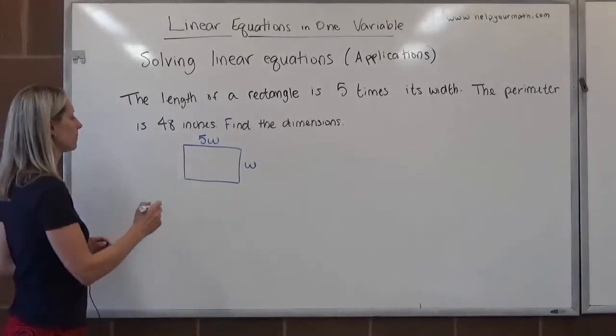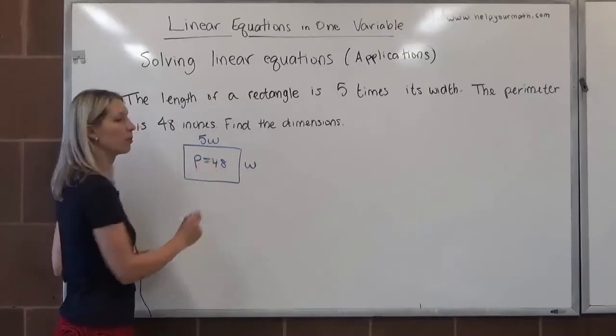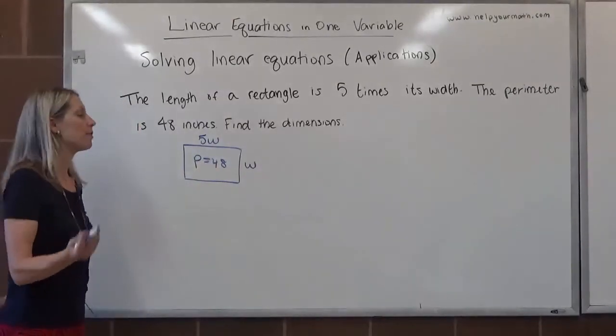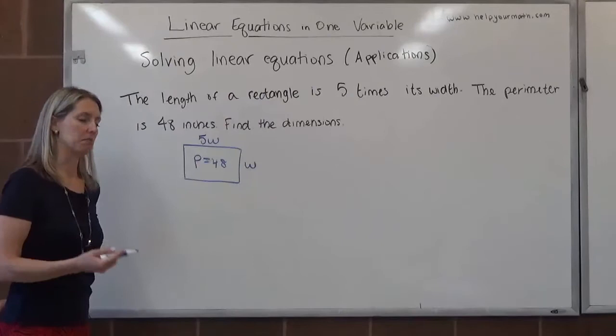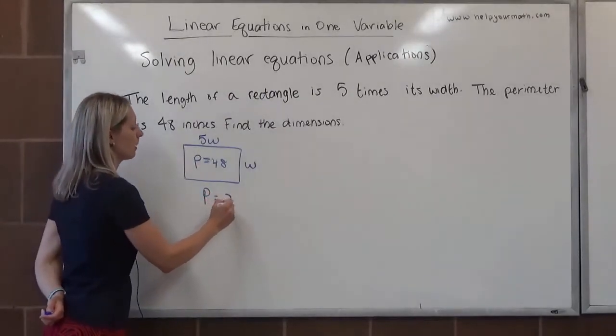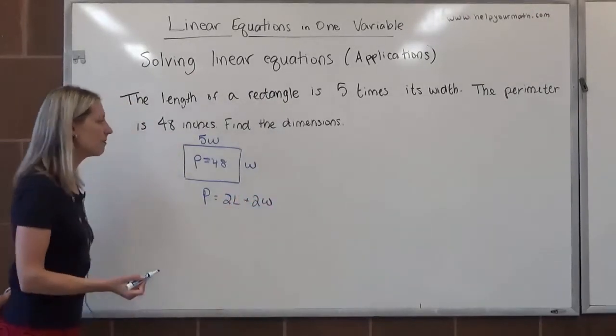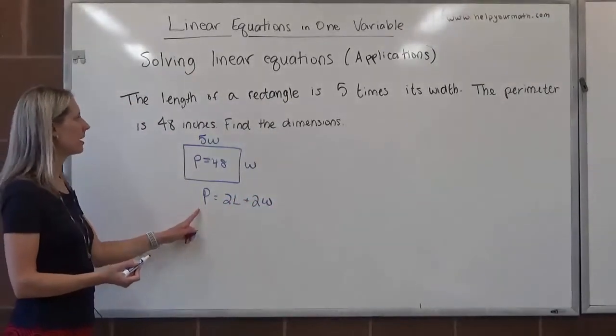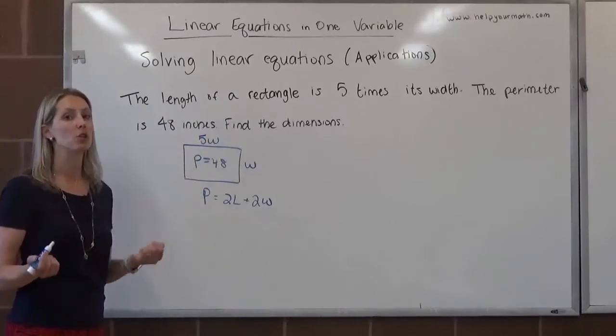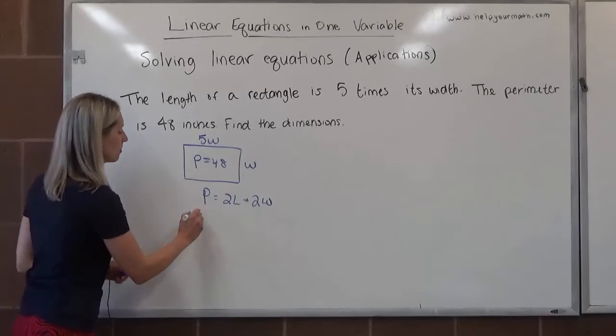The second sentence, the perimeter is 48 inches. So perimeter, this means we need to know a formula. What's the formula for perimeter of a rectangle? If you don't know it, you can Google it, or I'm going to tell you right now. Perimeter of a rectangle is twice the length plus twice the width. So we're going to fill in the pieces that we know here and see if, based on that, we can determine the dimensions of this rectangle. The perimeter is 48 inches.